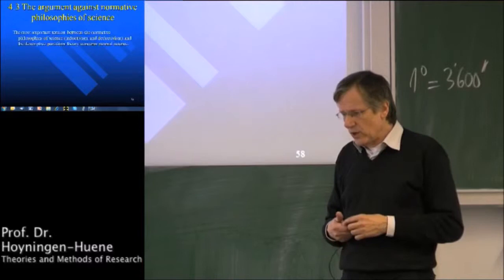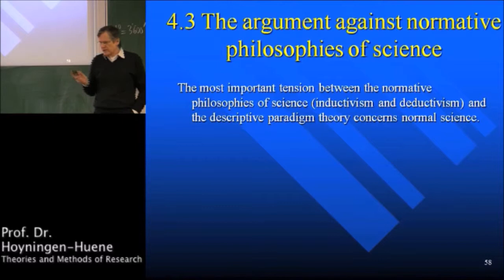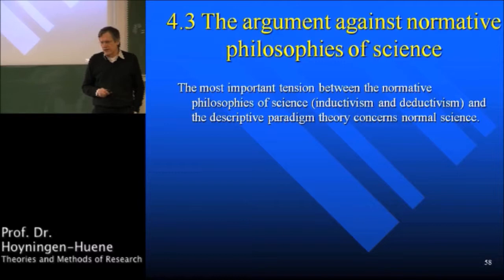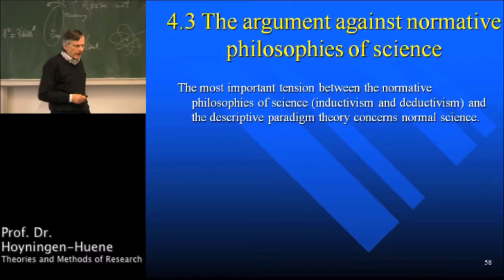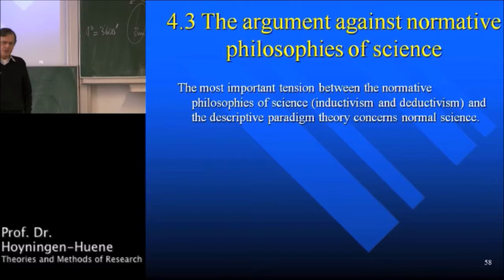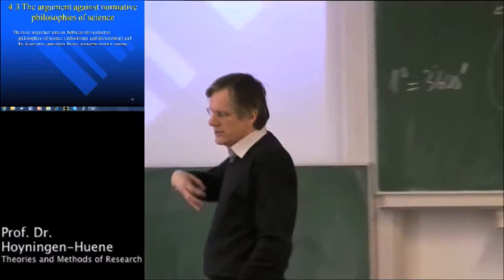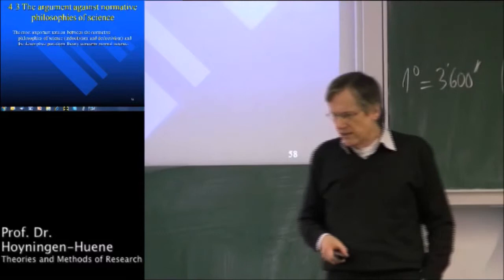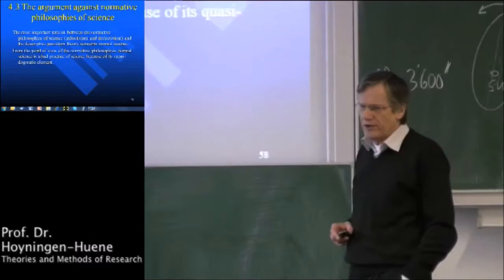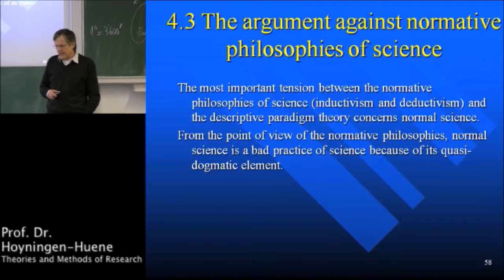Let us see where such tension arises. The most important tension between the normative philosophies of science — inductivism and deductivism — and the descriptive paradigm theory concerns normal science. In paradigm theory, normal science is a very important part of science: you stick to a paradigm, you have your paradigmatic solutions, and you model your scientific practice after these paradigmatic solutions.